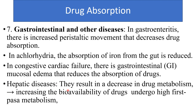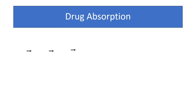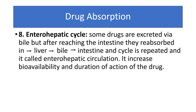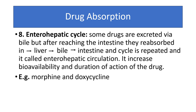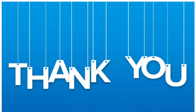In hepatic diseases, there is decreased drug metabolism and increased bioavailability of drugs that undergo first-pass metabolism, such as propranolol and lignocaine. Regarding the enterohepatic cycle: some drugs excreted via bile are reabsorbed from the intestine, and this liver-bile-intestine cycle repeats — this is called enterohepatic circulation. It increases the bioavailability and duration of action of the drug. Examples include morphine and doxycycline. Thank you for watching the video.